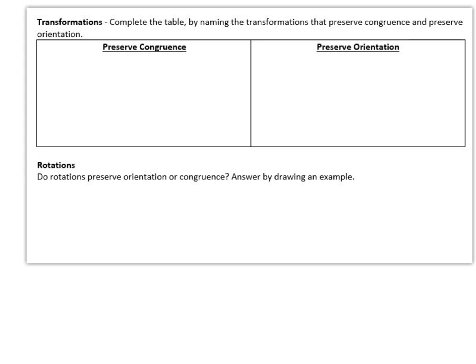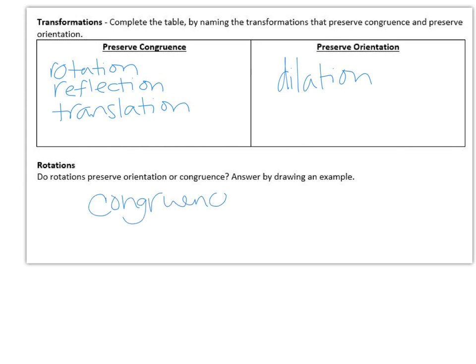On the next one we were talking about transformations and the ones that preserve congruence meaning they don't change the size of the shape is rotation because all you're doing is changing the orientation and reflection and translation. Those all preserve congruence where dilation is the only one that preserves orientation the way that it's facing or the way where it's located. Do rotations preserve orientation or congruence? We just said that they preserve congruence because they do not change the shape and you could draw an example of that with or without a coordinate grid.